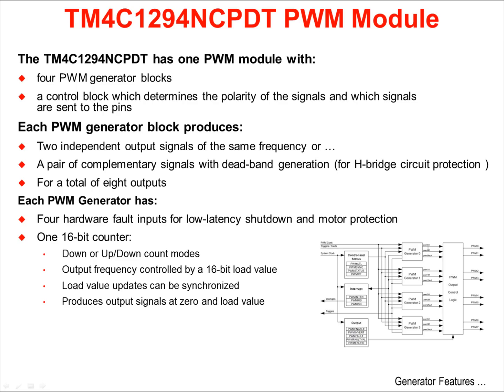Each generator's timing is based on a single 16-bit counter. This 16-bit counter has down or up-down count modes, and an output frequency that's controlled by a 16-bit load value. These load values can be synchronously updated across the generators. Output signals are produced at zero and the load value.